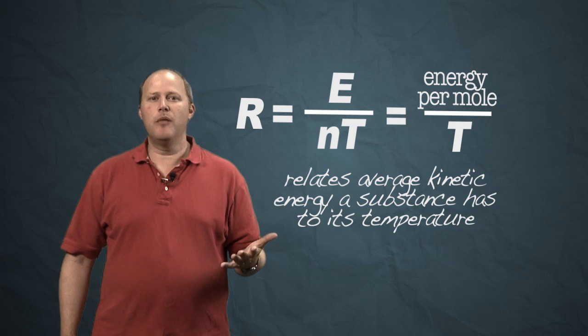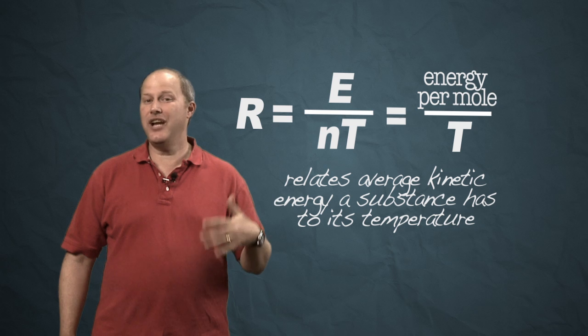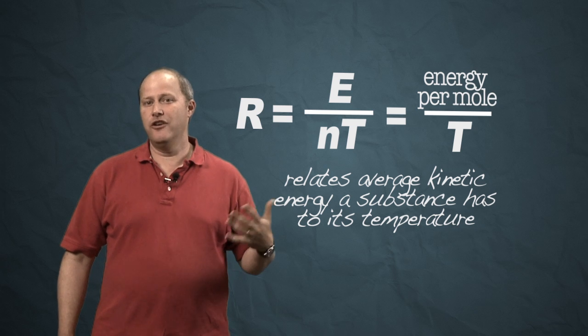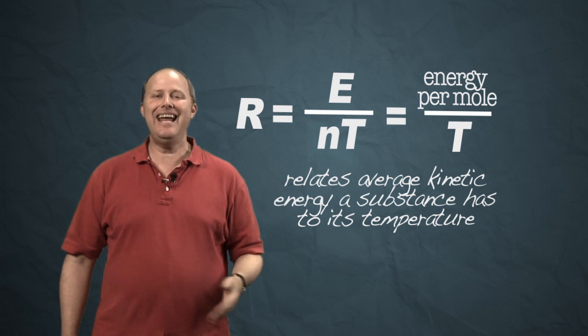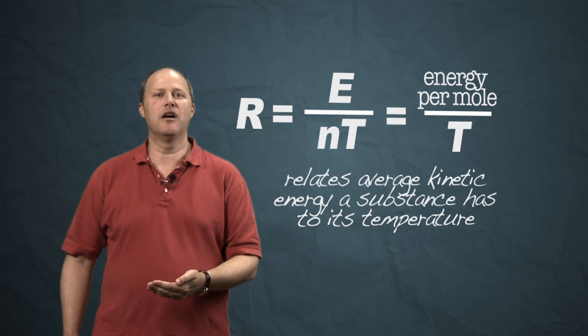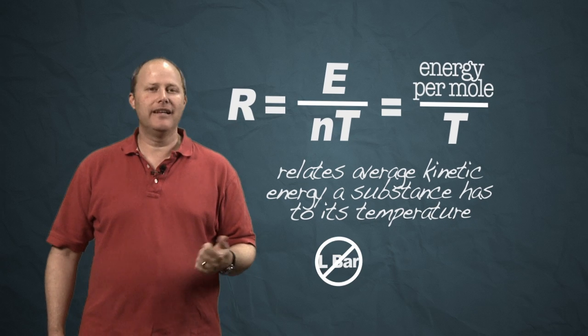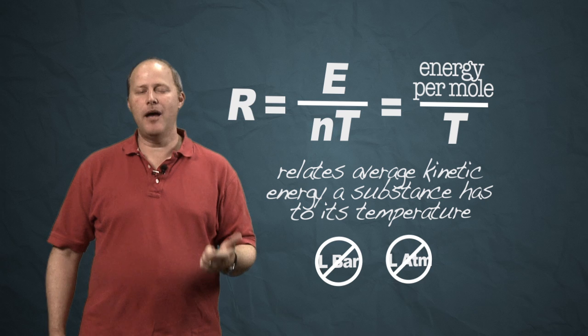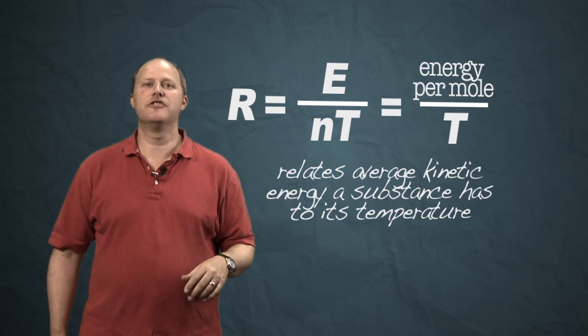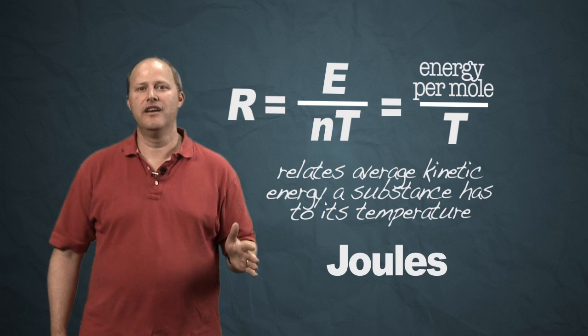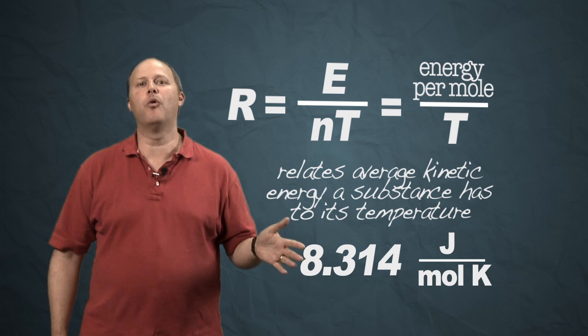And so when we start to do problems where we're thinking about changes in energy or the energy that a compound has and the ideal gas constant comes up, we don't want to be thinking about liter bars, we don't want to be thinking about liter atmospheres, but we want to think about common energy units, typically joules, 8.314 joules per kelvin per mole.